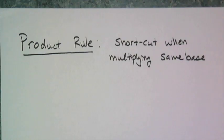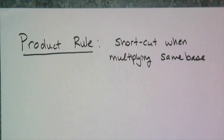Now let's look at some shortcuts to simplifying exponents. The first shortcut we're going to look at is something called the product rule, and what the product rule relates to is when you multiply the same base together.